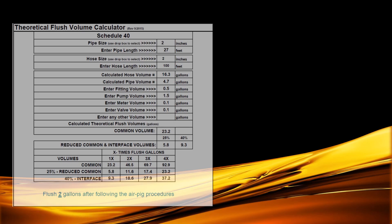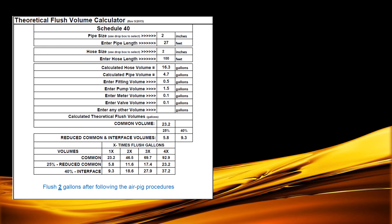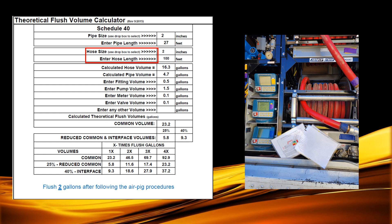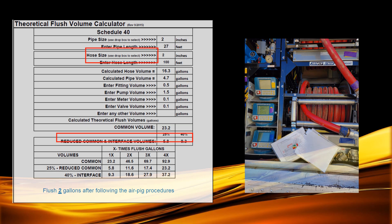The theoretical flush volume calculator is used to determine the amount of flush you will need to clear your line based on the size and length of your hose. This calculator is completely customizable to match the equipment you are working with. Every truck should have a copy of this on there, so if you're not in a familiar truck, you know what the flushing measurements are. This chart will provide you the reduced common volume and help with the flush chart to ensure that you are flushing correctly without wasting product.